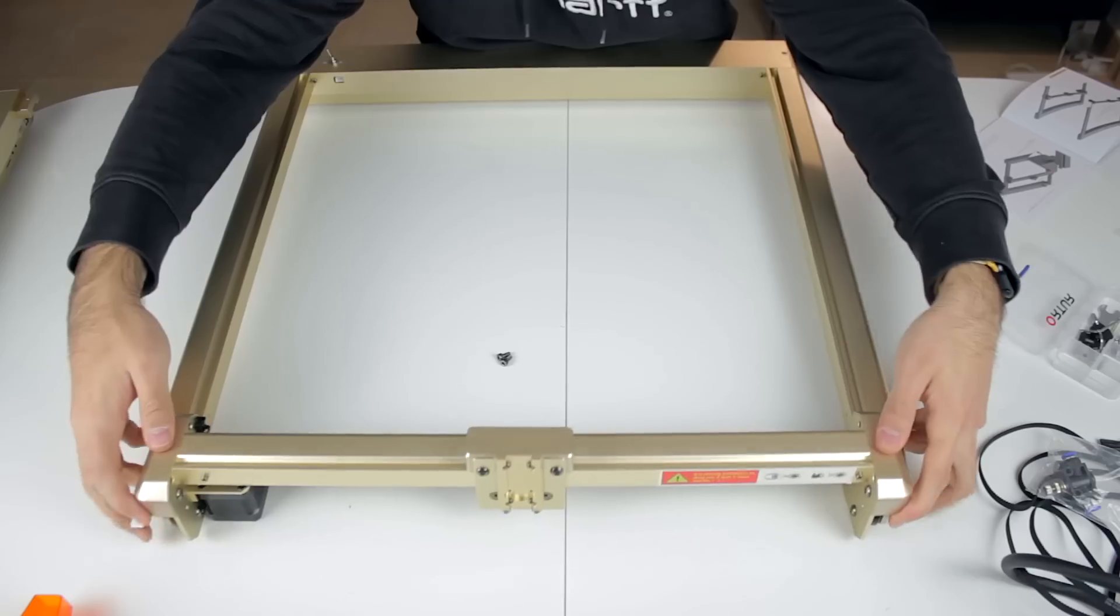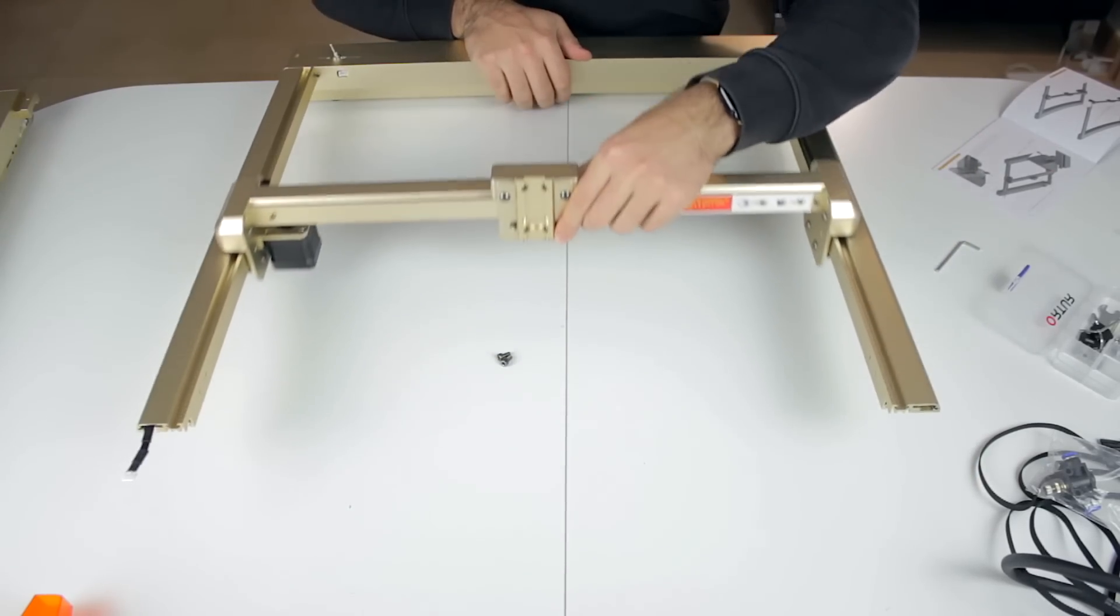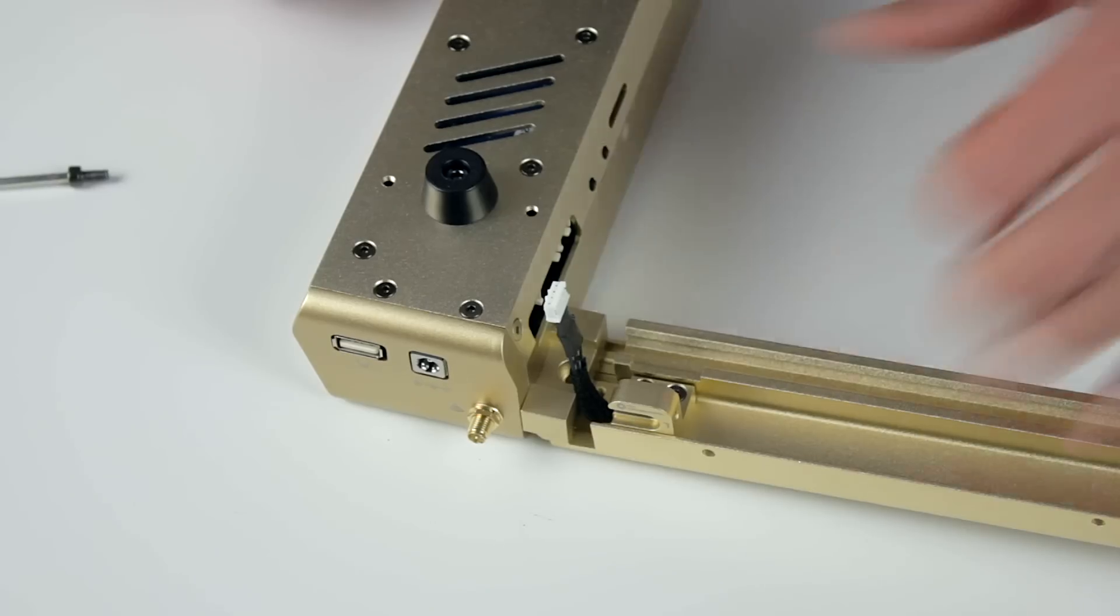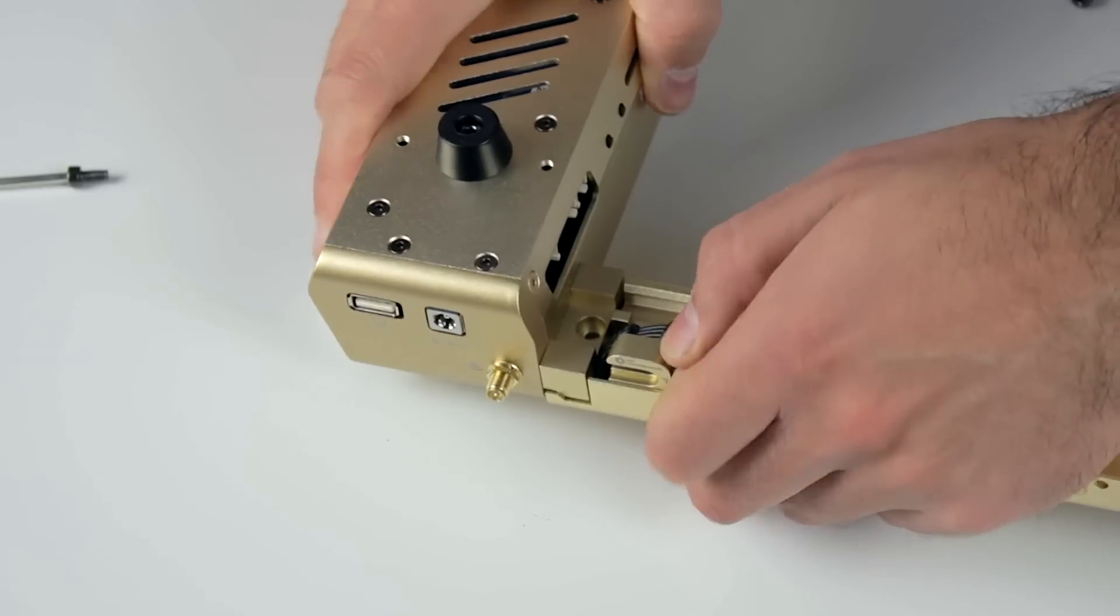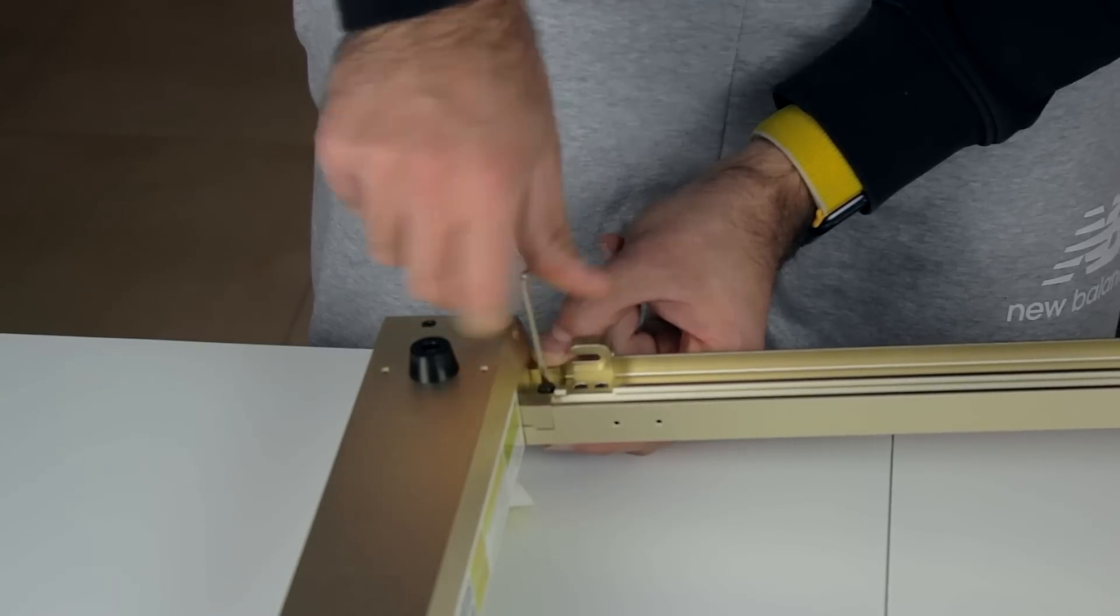We'll then slide the X axis gantry with the carriage facing to the front through the side profiles just like that. Once done, we'll pick up the front profile, turn the machine upside down, and install everything in place. We'll insert one of the bolts just like that and then continue with the other side.